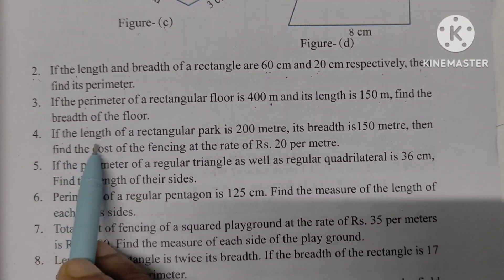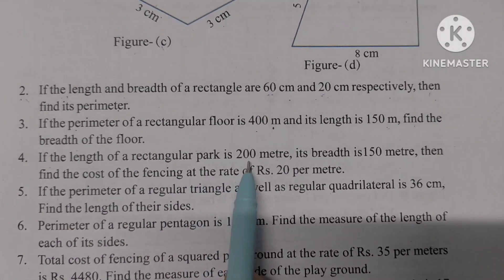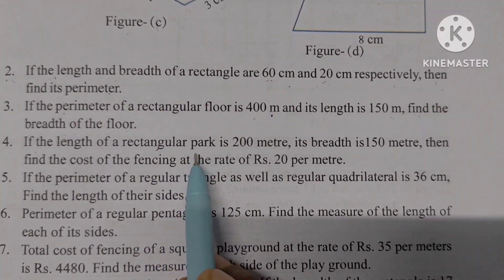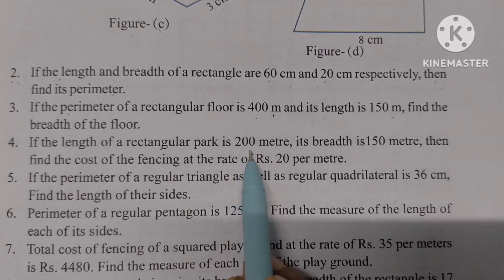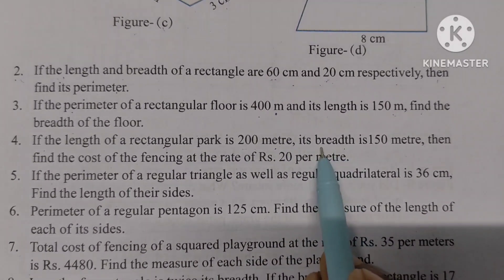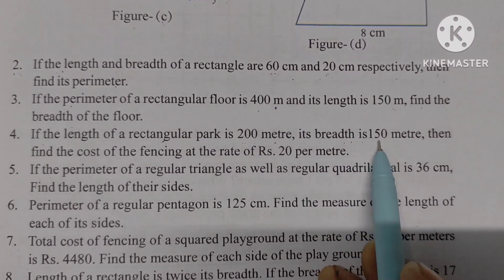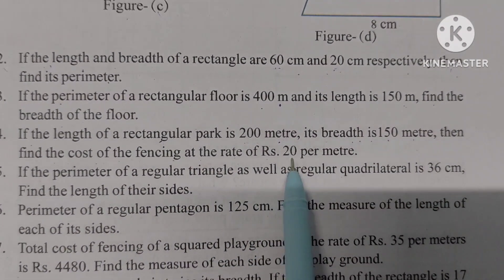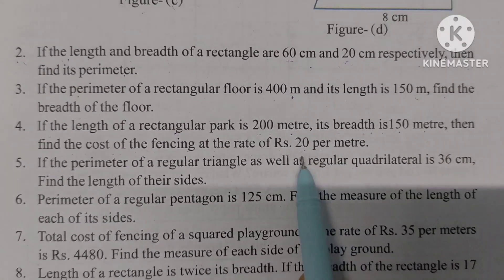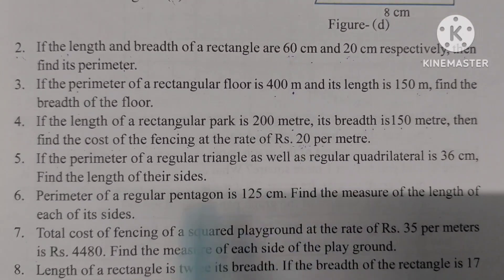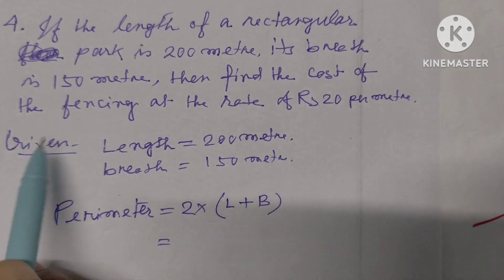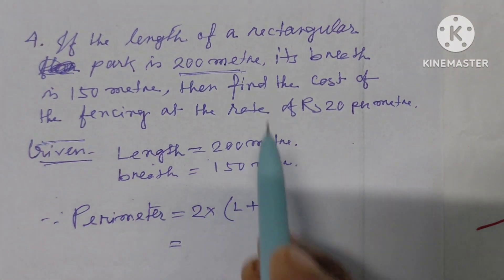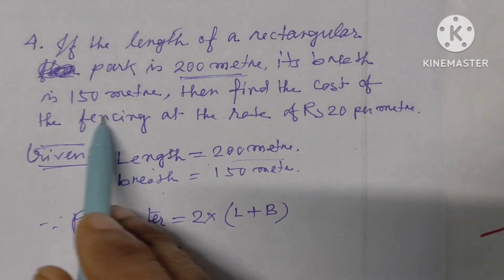Question 4: If the length of a rectangular park is 200 meters and its breadth is 150 meters, find the cost of fencing at the rate of rupees 20 per meter. Given: length of the rectangular park is 200 meters, breadth is 150 meters.